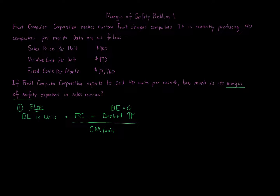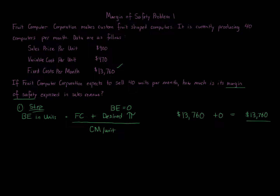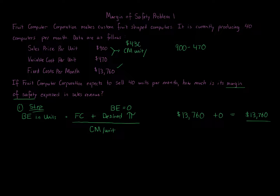Our fixed costs are $13,760. Since it's break-even, desired profit is zero. So the numerator is $13,760. For the denominator, the contribution margin per unit is simply sales price minus variable cost: $900 minus $470 equals $430 per unit.